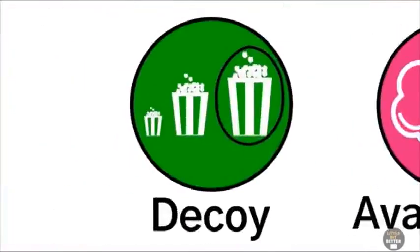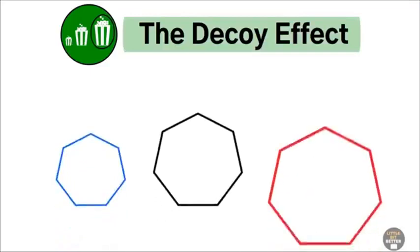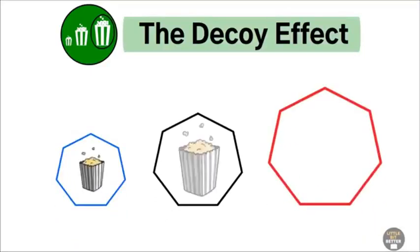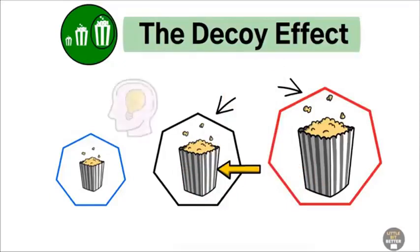The decoy effect. The decoy effect is when your preference between two options changes when a third, less attractive option is introduced. Like choosing a medium popcorn because it seems cheaper compared to the large one. To avoid this, evaluate each option alone. This helps you to choose what you really want, not just what seems like a better deal in comparison.